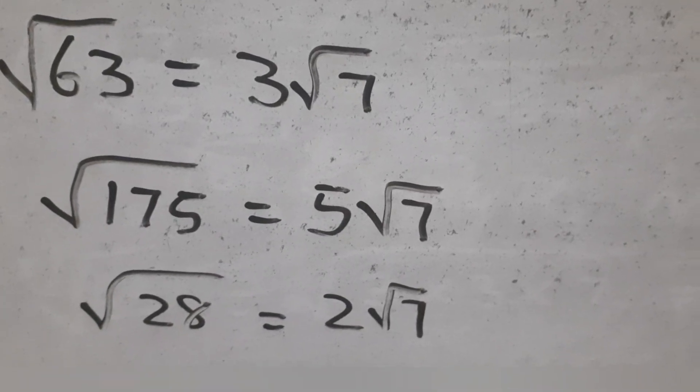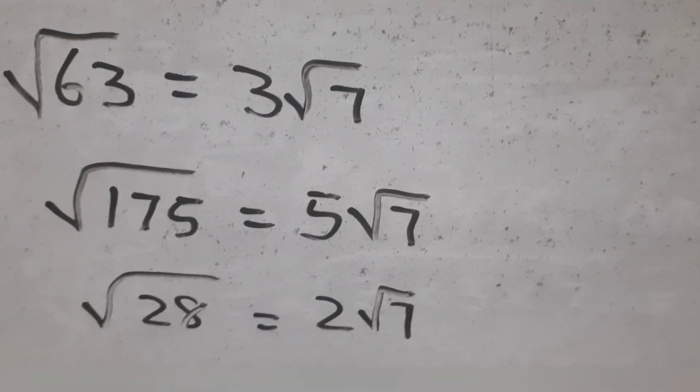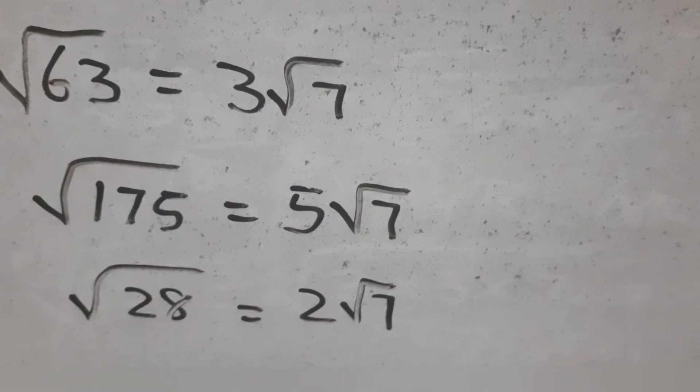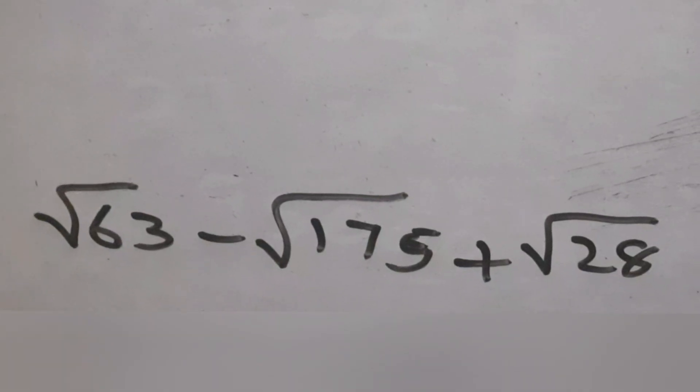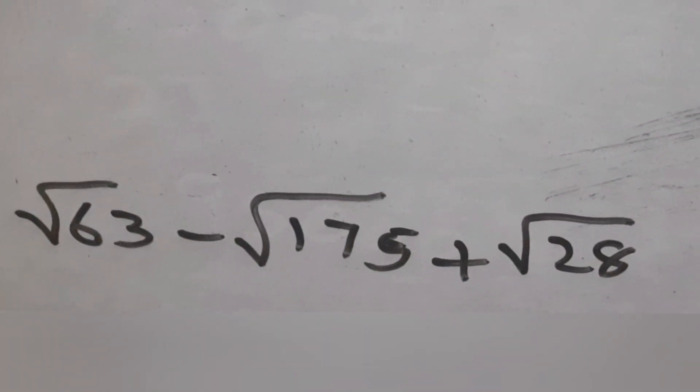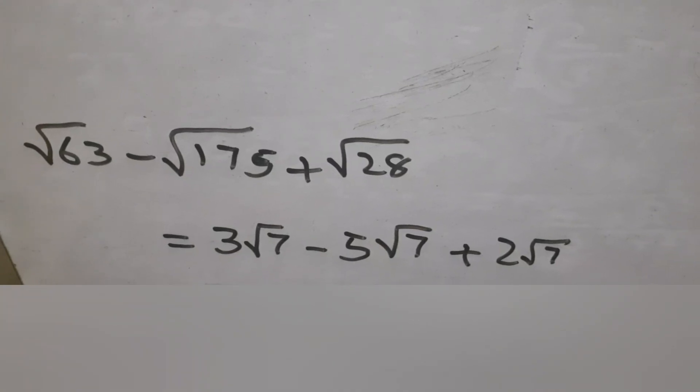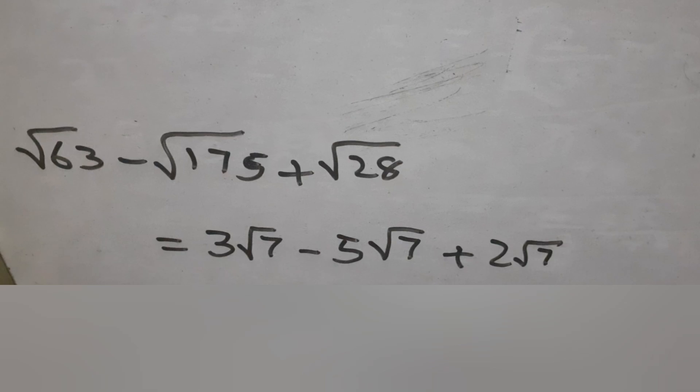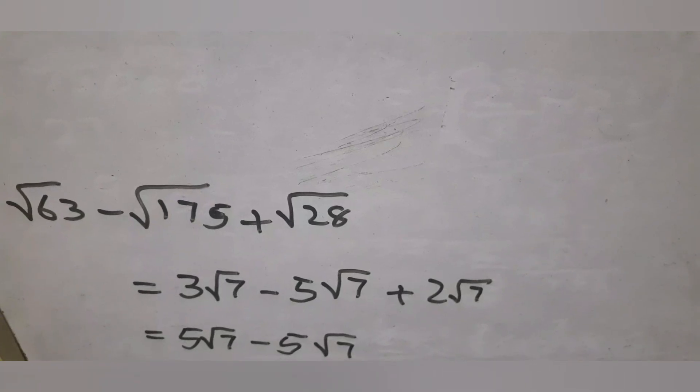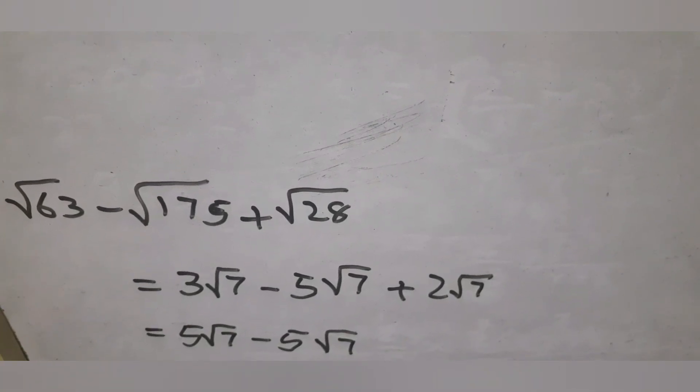So we substitute these values into the given expression. 3 root 7 plus 2 root 7 gives 5 root 7. So the expression becomes 5 root 7 minus 5 root 7, which is 0.